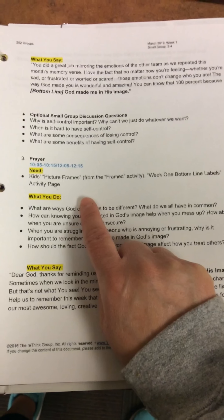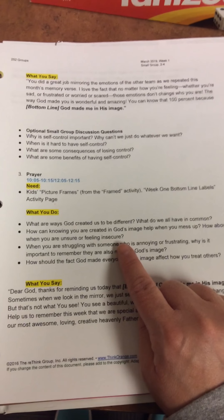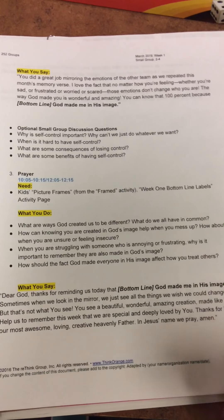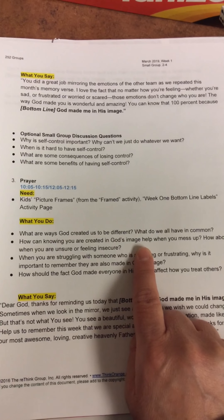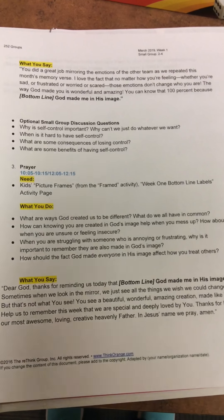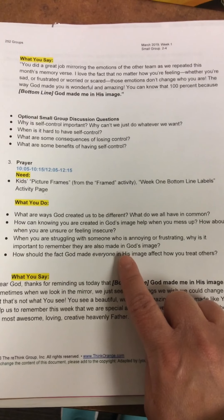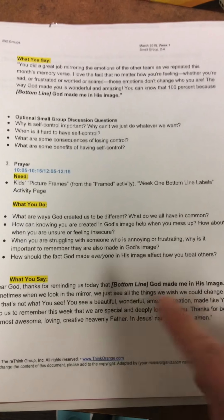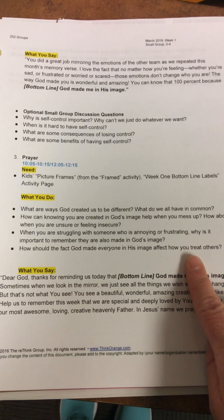For prayer, you'll need the picture frames kids made and these labels — they'll actually be on labels that say 'God made me in His image.' Ask kids: what are some ways God created us to be different, and what are some things we have in common? How can knowing that you're created in God's image help when you mess up, or when you're feeling insecure? When struggling with someone who is annoying or frustrating, why is it important to remember they are made in God's image? How should the fact that God made everyone in His image affect how you treat others?